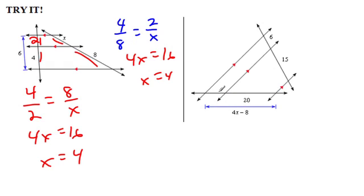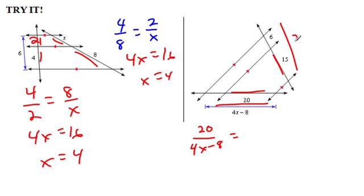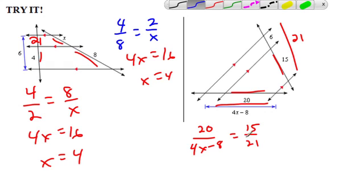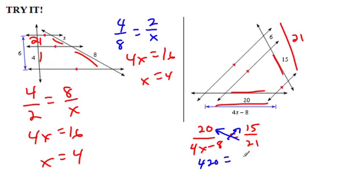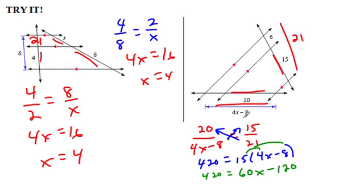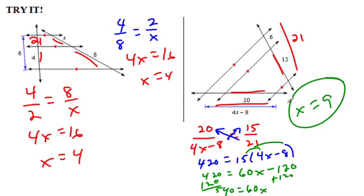The next one — I don't know this little chunk and can't find it directly, so I'm going to use the whole sides. 20 is to the big side (4X minus 8) as 15 is to 21 (since 6 plus 15 is 21). Cross multiply: 21 times 20 is 420. Distribute: 420 equals 60X minus 120. Add 120 to both sides to get 540 equals 60X. Divide both sides by 60 — X equals 9.